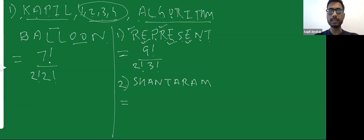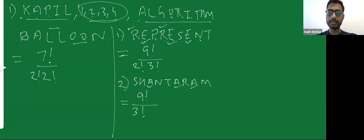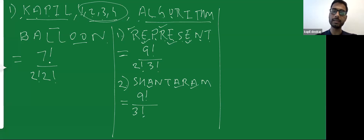Let's consider one more word from the textbook. There are 9 letters, so we can arrange them in 9 factorial ways. Checking for repeated letters: A is repeated three times, so we divide by 3 factorial. Nothing else is repeated. So the number of permutations is 9! divided by 3!.